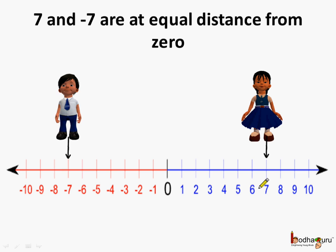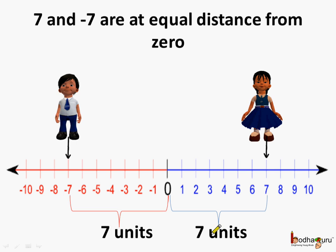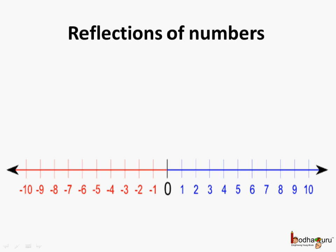Same way, 7 and minus 7 are also at equal distance from 0, which is 7 units each. Such numbers are called reflections — like 4 and minus 4, both are at equal distance from 0 but in opposite directions.